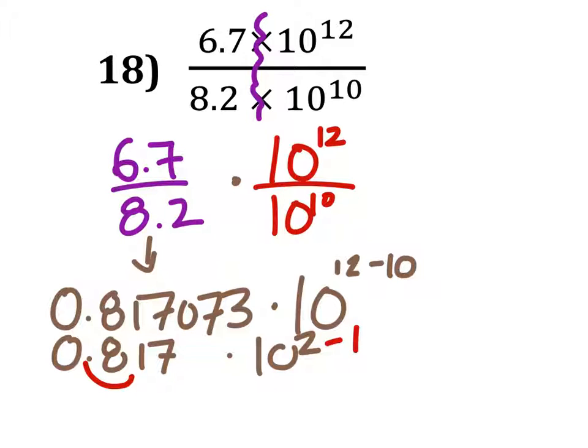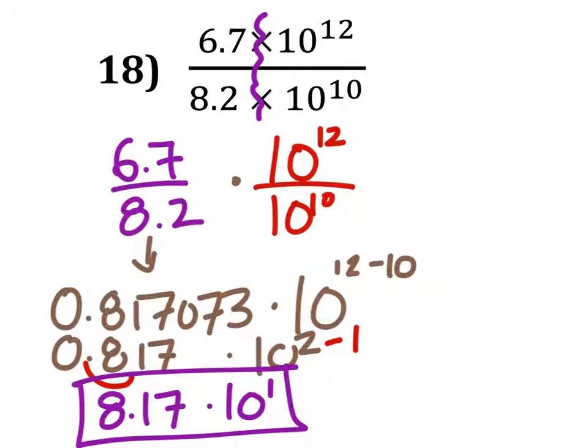That's why we'll have to subtract 1 from our exponents. And that gives me 8.17 times 10 to the power of 1. And we are done. Thank you.